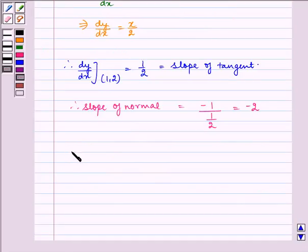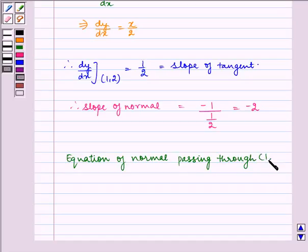Now let us form the equation of normal passing through point (1, 2) and slope minus 2.